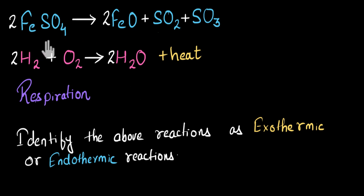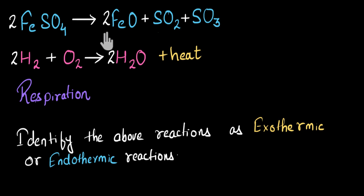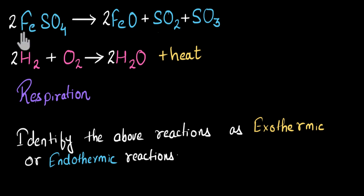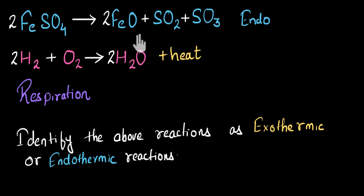In the first reaction, iron sulfate is decomposing into multiple products. If you don't remember the actual experiment, it will be hard to tell whether this is endothermic or exothermic. But we have a trick — we know this is a decomposition reaction, and decomposition reactions in general require more energy to break down. Reactions that require more energy are called endothermic reactions. So this reaction is endothermic in nature. In the actual experiment, you have to heat up iron sulfate for it to decompose, and you wouldn't get any heat or light — that's why this is endothermic.